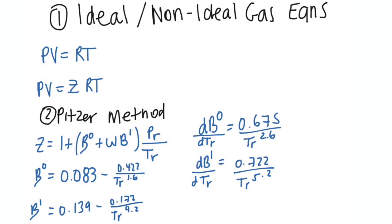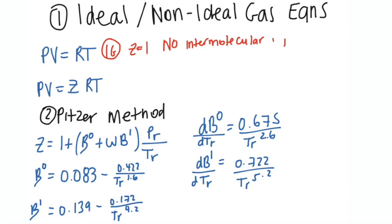To start, I want to go through ideal and non-ideal gas equations. We all know our ideal gas law, which is PV equals RT. Just to clarify, there's no NRT because that V is molar volume — it's in units of something like meters cubed per mole. This equation is for ideal gases, so Z is equal to 1. Ideal gas means there are no intermolecular interactions between molecules.